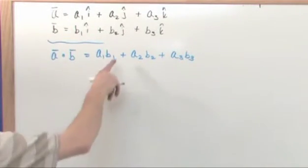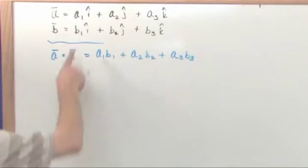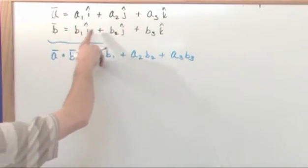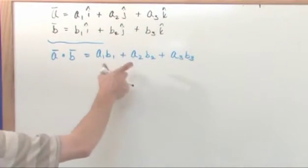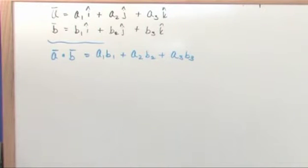So notice I don't have any i's, j's or k's here. I've just got a number, which is a1 times b1, a number a2 times b2, a number a3 times b3. I add them all together, I'm getting a number back. I'm not getting a vector back.